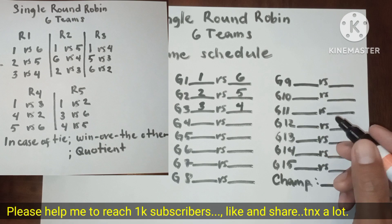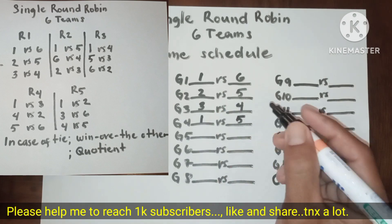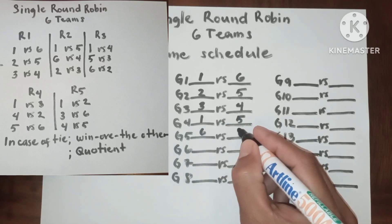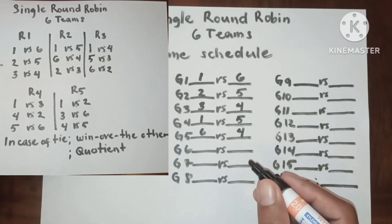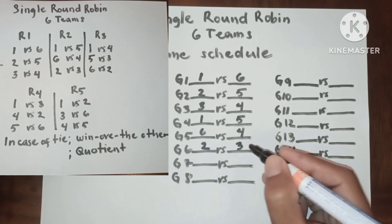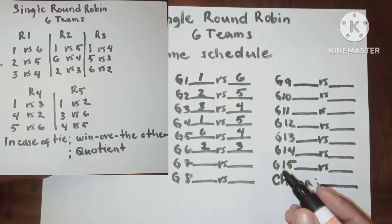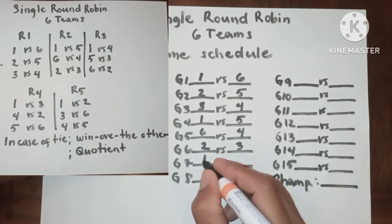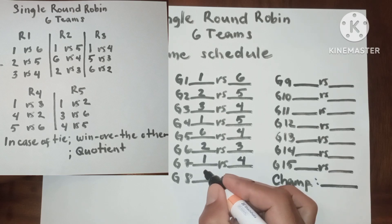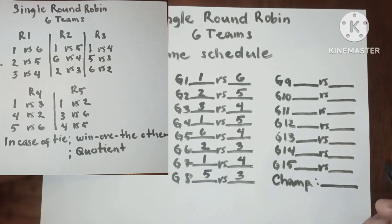In round two, we have: one versus five, six versus four, two versus three. In round three, we have: one versus four, five versus three, and five versus six.